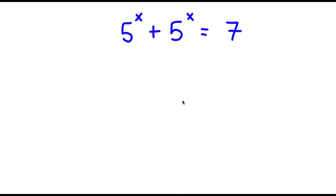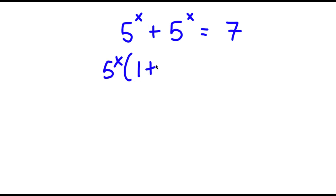So in this problem, I have phi to the power of x plus phi to the power of x is equal to 7. To start, I'm going to factor out phi to the power of x from my left hand side. So now I have phi to the power of x times 1 plus 1 is equal to 7.